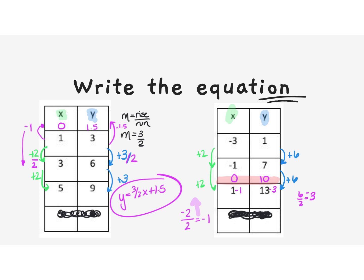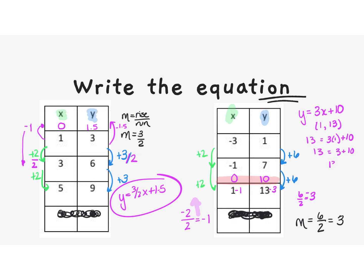So our slope is rise over run, which is 3. Our equation is y equals 3x plus 10. Let's throw a point in and double-check: we'll use x equals 1 and y equals 13. If 13 equals 3 times 1 plus 10, then 13 equals 13 — our equation is in fact correct.